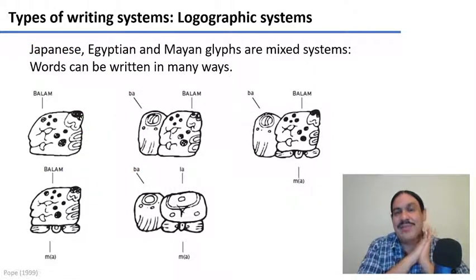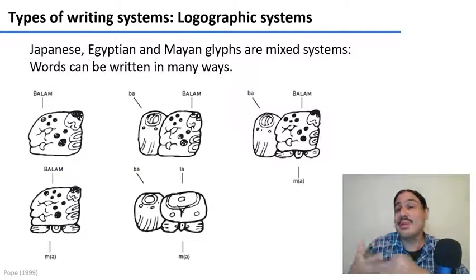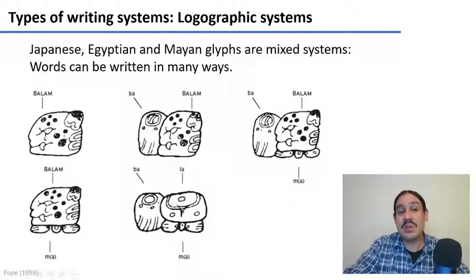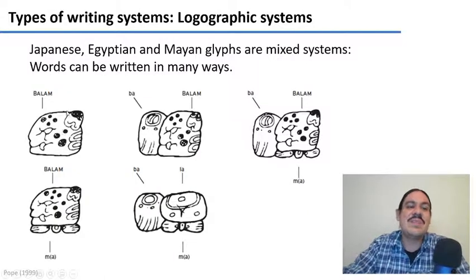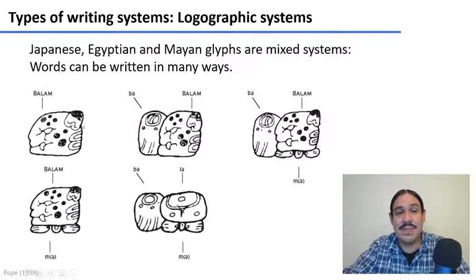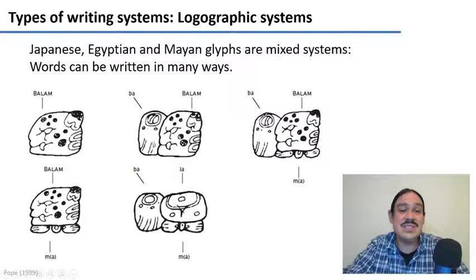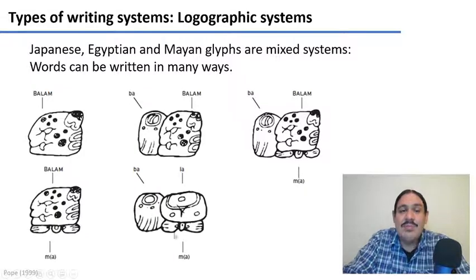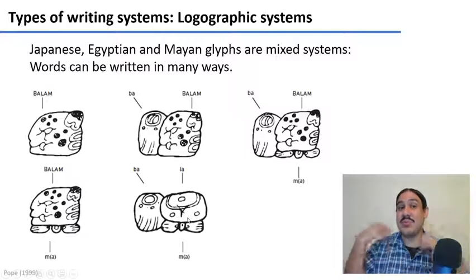All of these logographic systems face the same challenge: too many symbols. Chinese and Japanese use thousands — to read Japanese you need about 2,000 symbols. Egyptian had about 800 and Mayan also had hundreds. So they all developed ways to cope, often as mixed systems where words could be written in more than one way to help with pronunciation. For example, the Mayan word for jaguar, 'balam', could be written with a syllable prefix as a pronunciation guide, or with 'ba' at the beginning and 'ma' at the end, or just written out syllabically as 'ba-lam'. All of these would be pronounced the same — they're just different ways for the scribe to remember how to pronounce the word. Egyptian worked in exactly the same way.